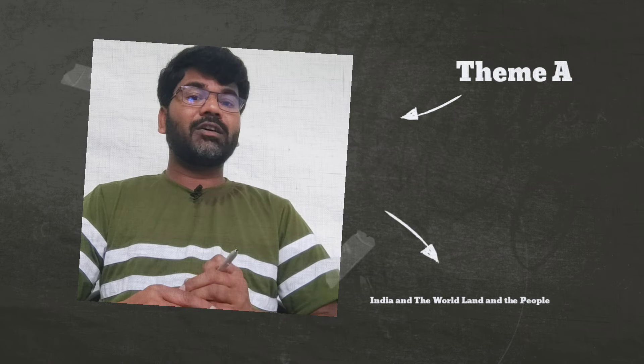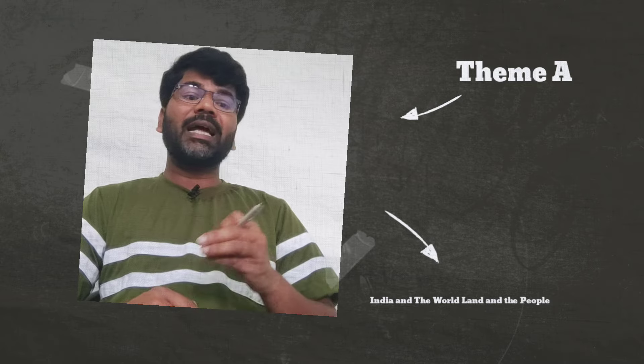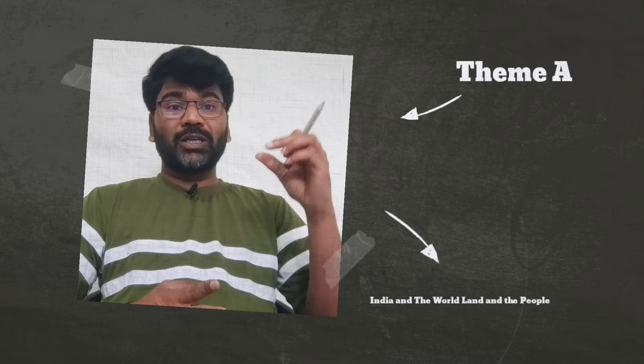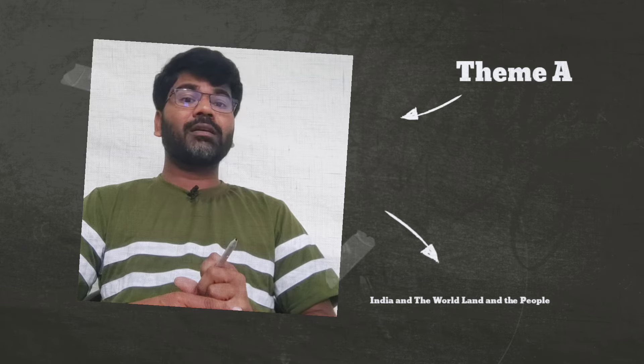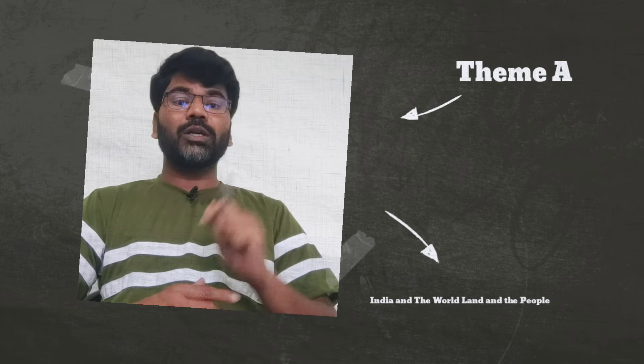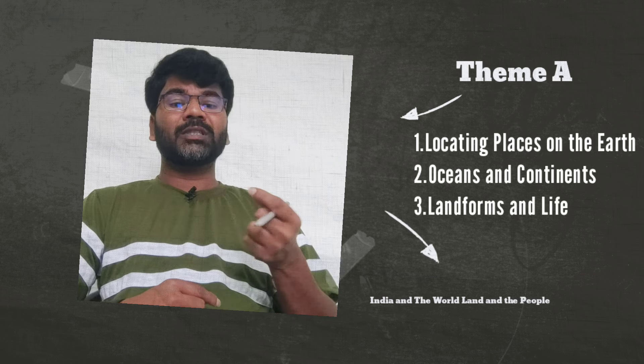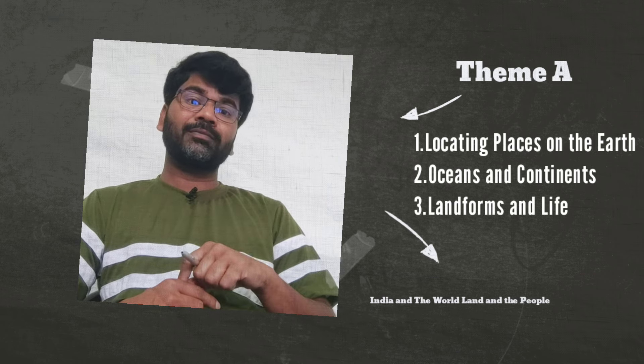In Theme A, the title is 'India and the World: The Land and the People.' We can say it is a geographical concept. In this Theme A, there are three chapters: one is 'Locating Places on the Earth,' the second one is 'Oceans and Continents,' and the third one is 'Landforms and Life.' This is Theme A.